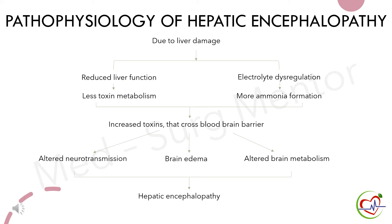Pathophysiology of hepatic encephalopathy. Due to etiological factors like liver damage, liver function is reduced, which results in less toxin metabolism. At the same time, there is electrolyte dysregulation in the body. This leads to more ammonia formation. Due to this, increased amounts of toxins cross the blood-brain barrier and reach the brain. It results in altered neurotransmission, brain edema, and altered brain metabolism. Finally, it causes brain function decline, and is called hepatic encephalopathy.